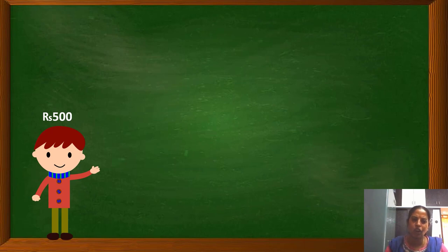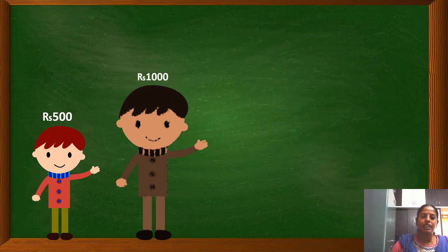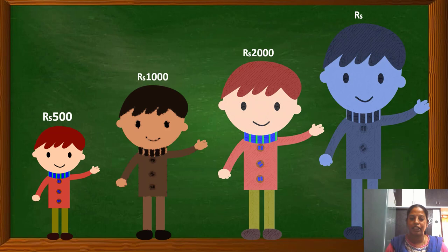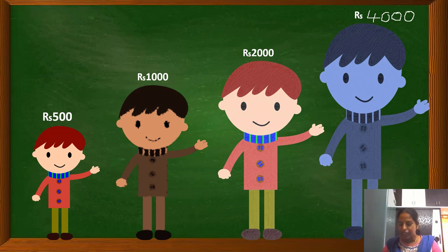Consider one more example: Vihan gets pocket money of rupees 500, and it doubles every year. So the next year he gets rupees 1000, the year after rupees 2000, then rupees 4000, and then rupees 8000. You can guess the next number because it is also following a certain rule or pattern.